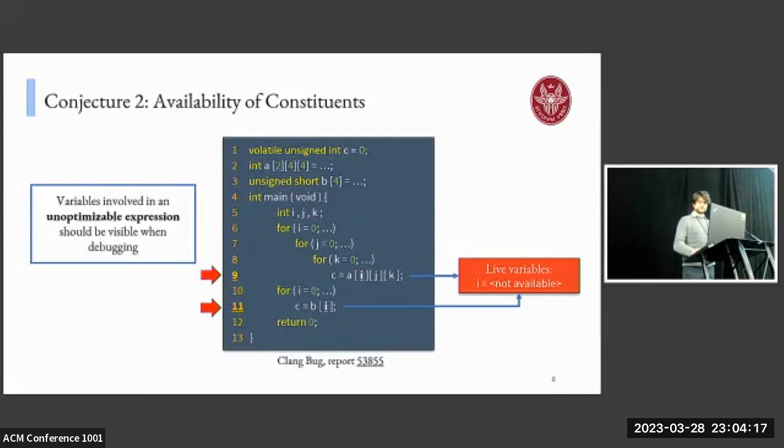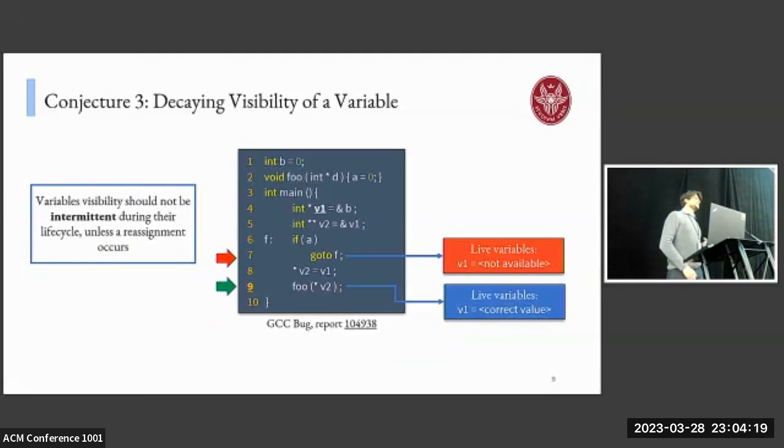The last conjecture is based on the decaying visibility of a variable, and it says that a variable's visibility should not be intermittent during debugging during its life cycle, unless a reassignment occurs. In this example from a bug confirmed in GCC, we have that variable V1, which is first assigned at line four, is not visible when stepping on line seven but becomes later visible when stepping on line nine, and this violates our conjecture.